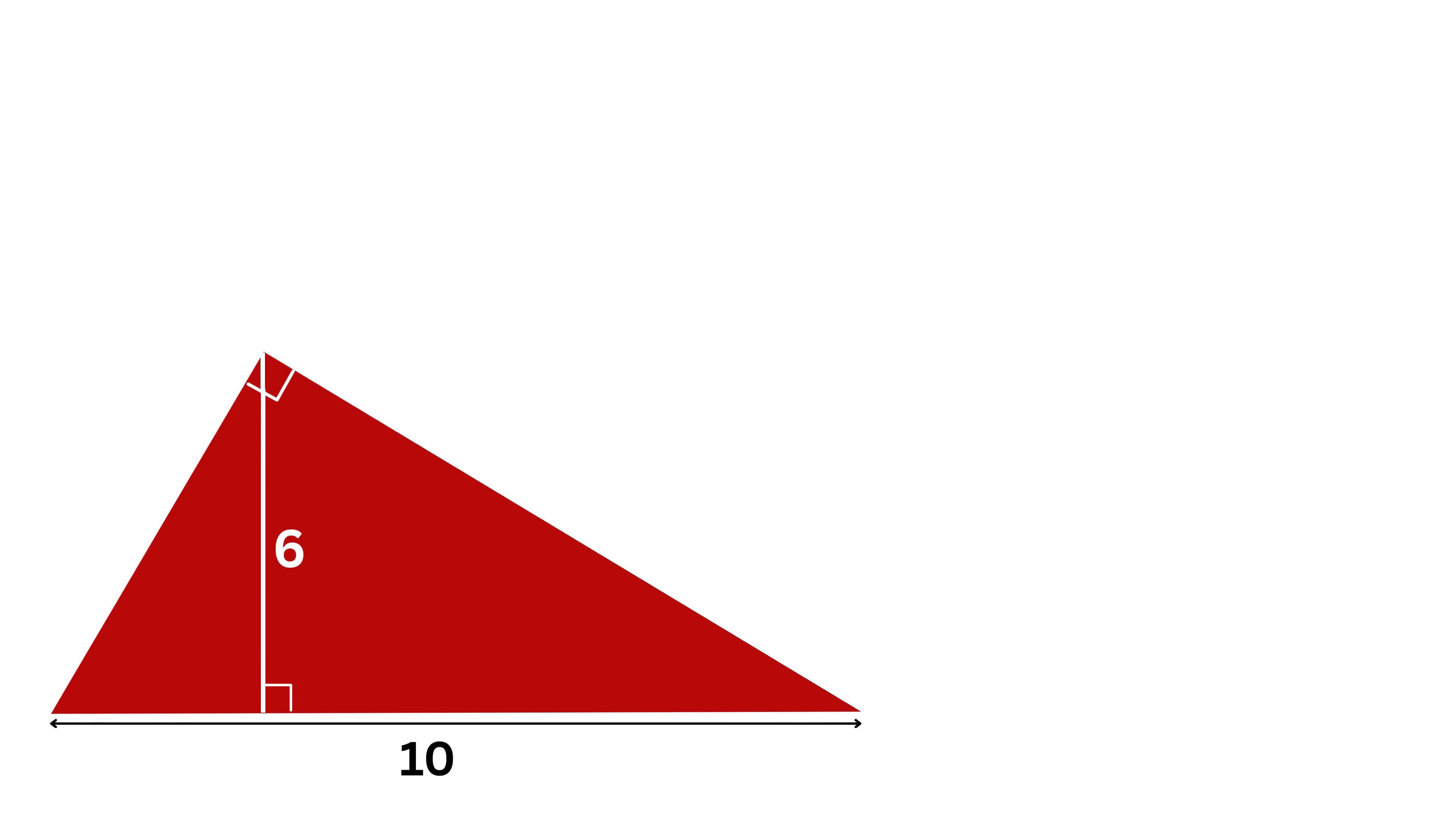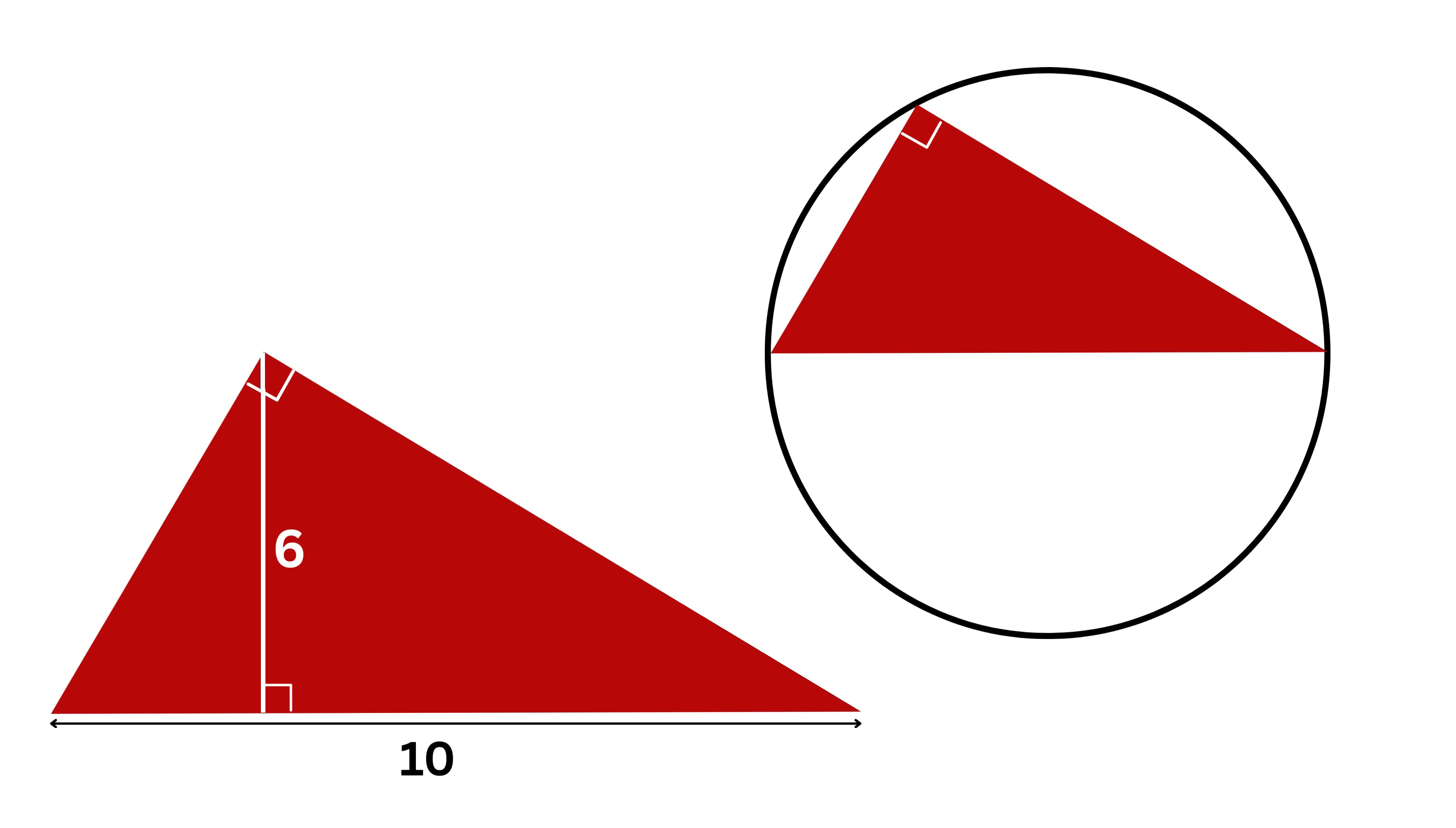There is another way to look at this problem. Suppose we have a circle and we draw a right triangle inside that circle with the hypotenuse of the triangle as diameter. Then by a famous rule in geometry called Thales' Theorem, any triangle drawn inside a circle with the diameter as its hypotenuse will always be a right triangle.